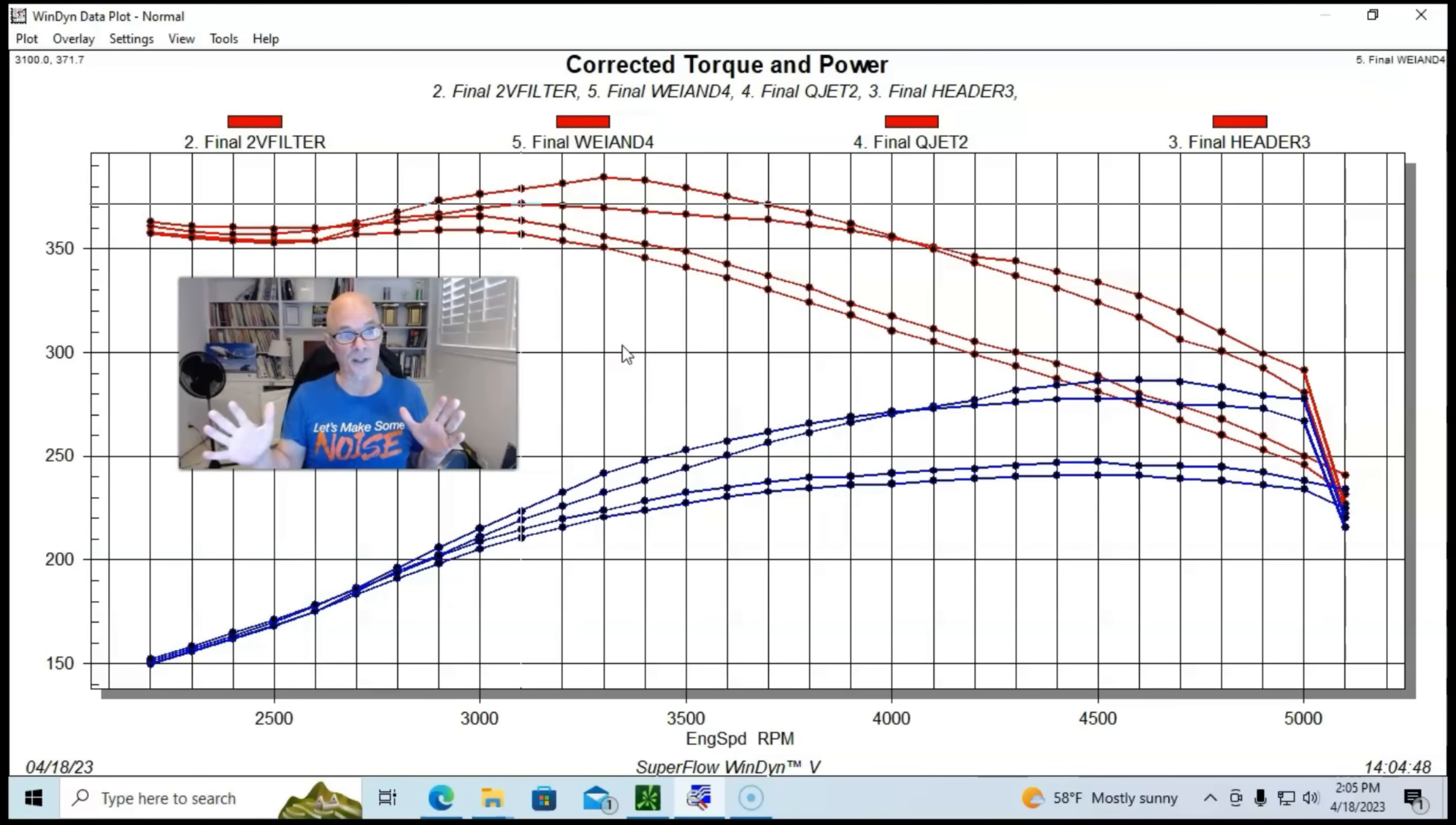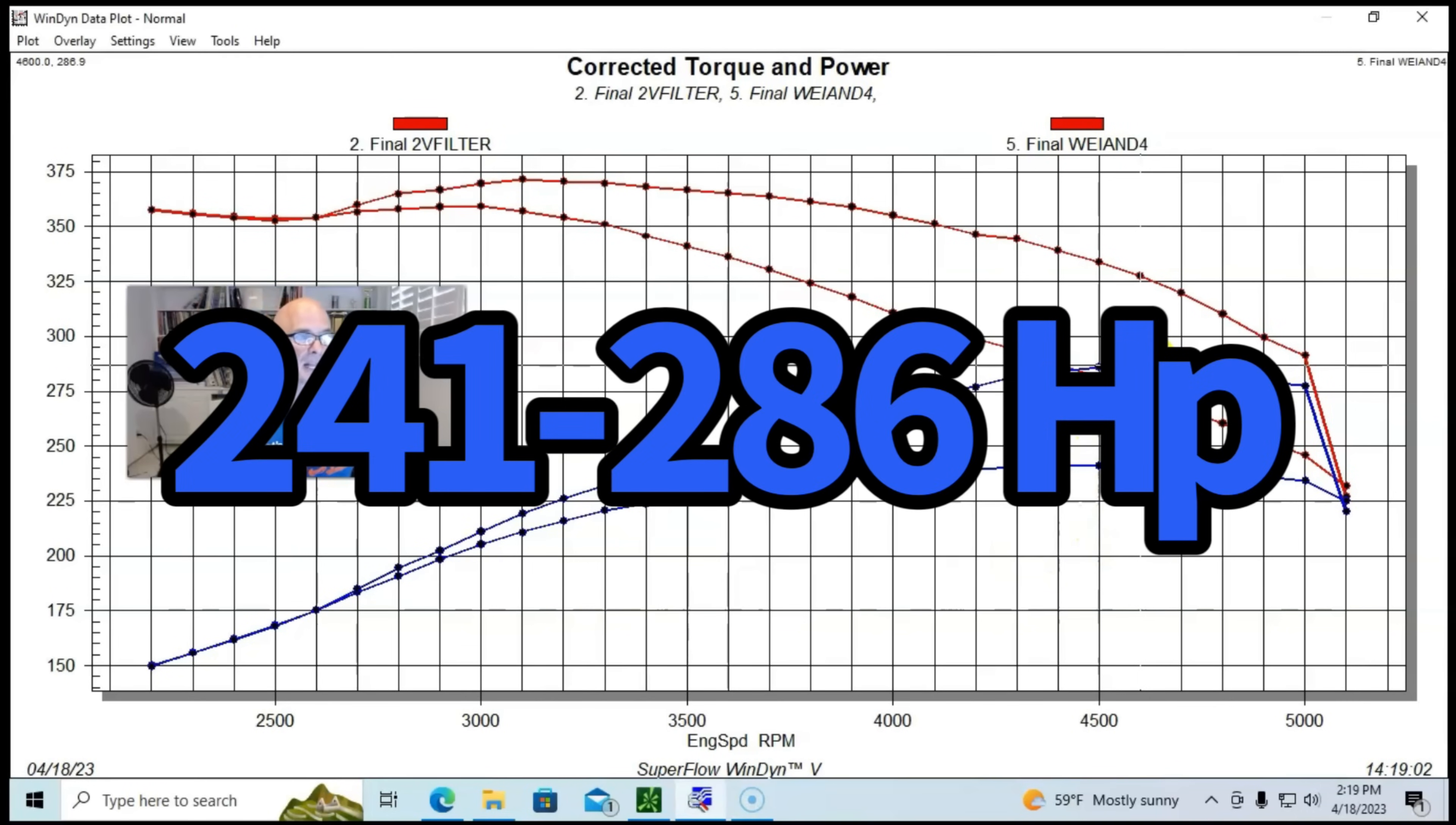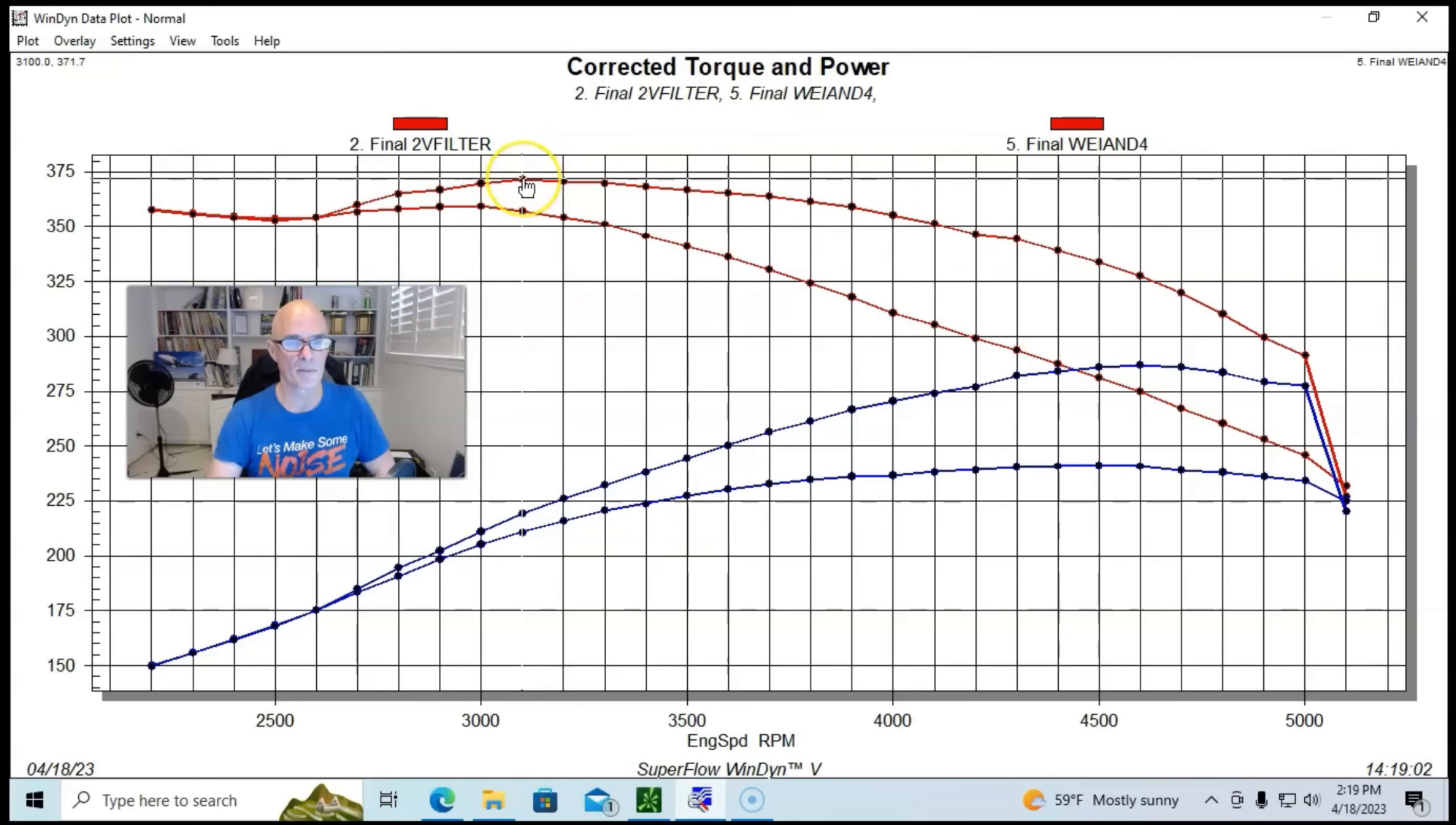Now let's take a look at some other modifications. I don't want to get too busy here on our dyno graph - I want to be able to differentiate those. Let's jump in on some more mods. We went from 241 horsepower to 287 horsepower, and peak torque went from 359 up to 371.